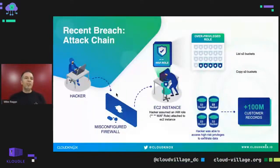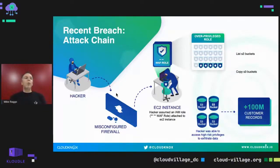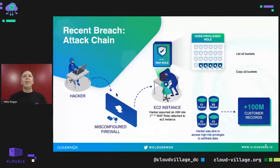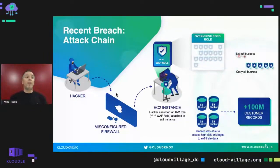One prominent breach involved a financial services institution whose web application firewall was breached via server-side request forgery. Once access to that IAM role was obtained, the attacker exploited the over-permissioned access — all those toxic combinations of permissions. At a high level, the attacker uncovered and mapped over 700 other S3 buckets in the environment that had never been used by that particular role. With read-only access, they determined one S3 bucket contained more than 100 million customer records and downloaded them.